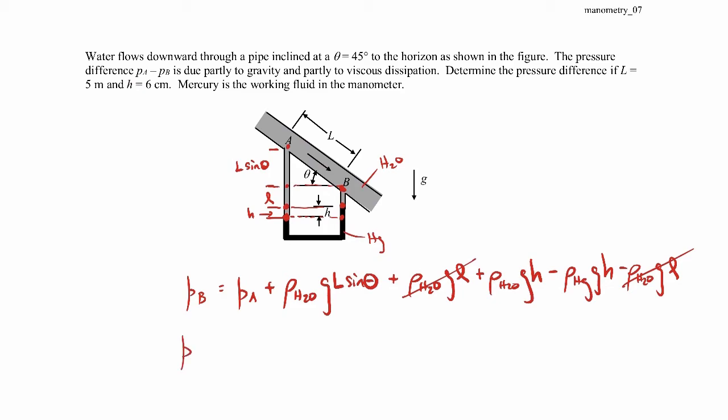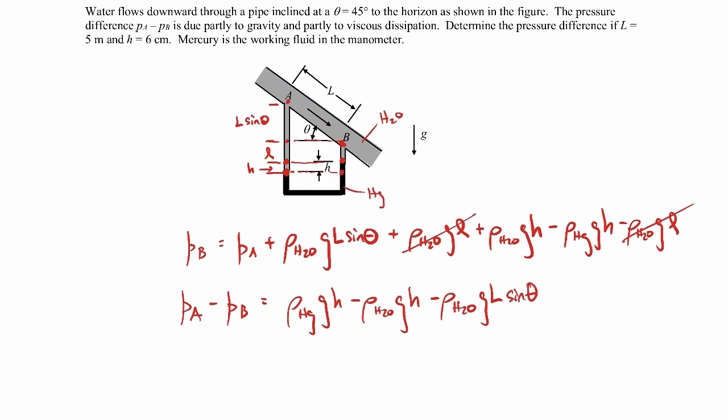So pressure at A minus the pressure at B will end up being rho of the mercury times G times H minus density of the water times G times L sine theta. This is just rearranging some terms, and I can just leave it like that.